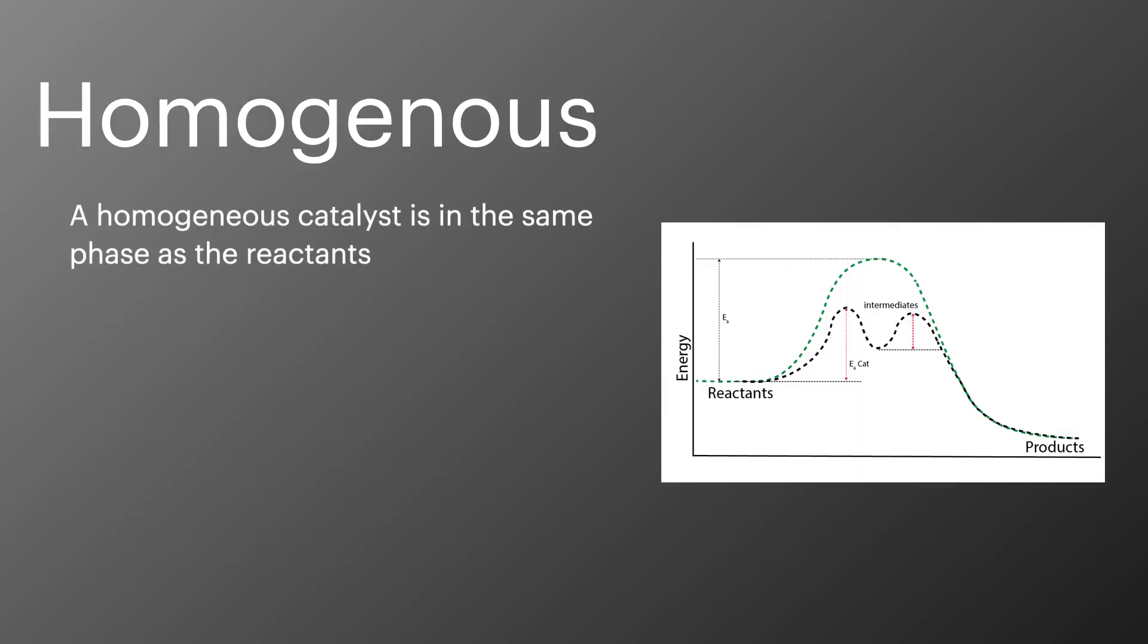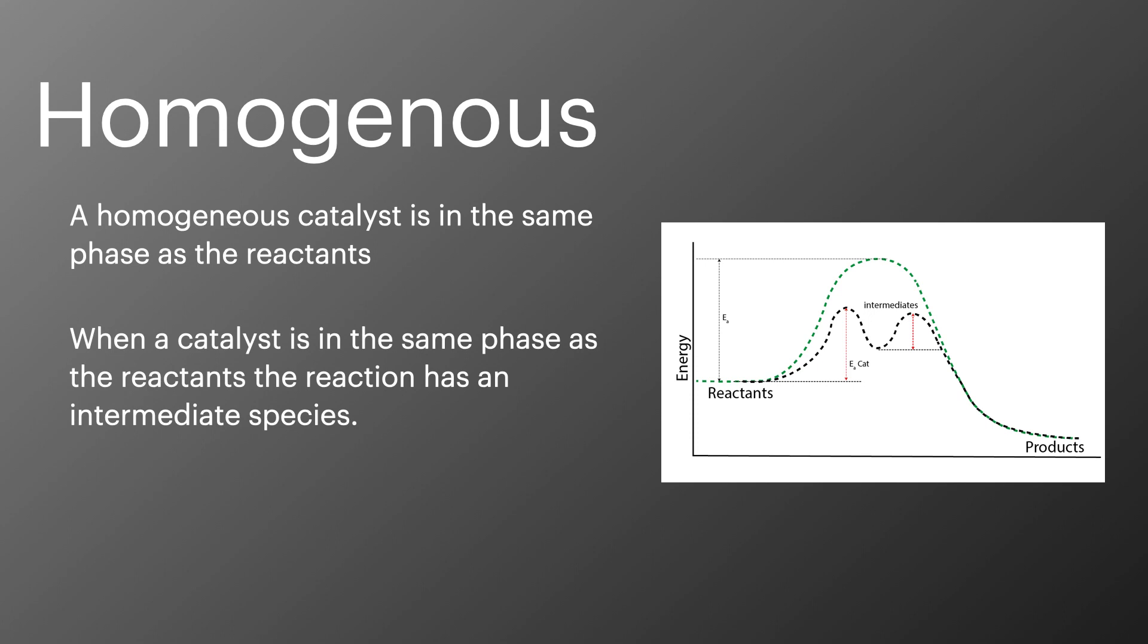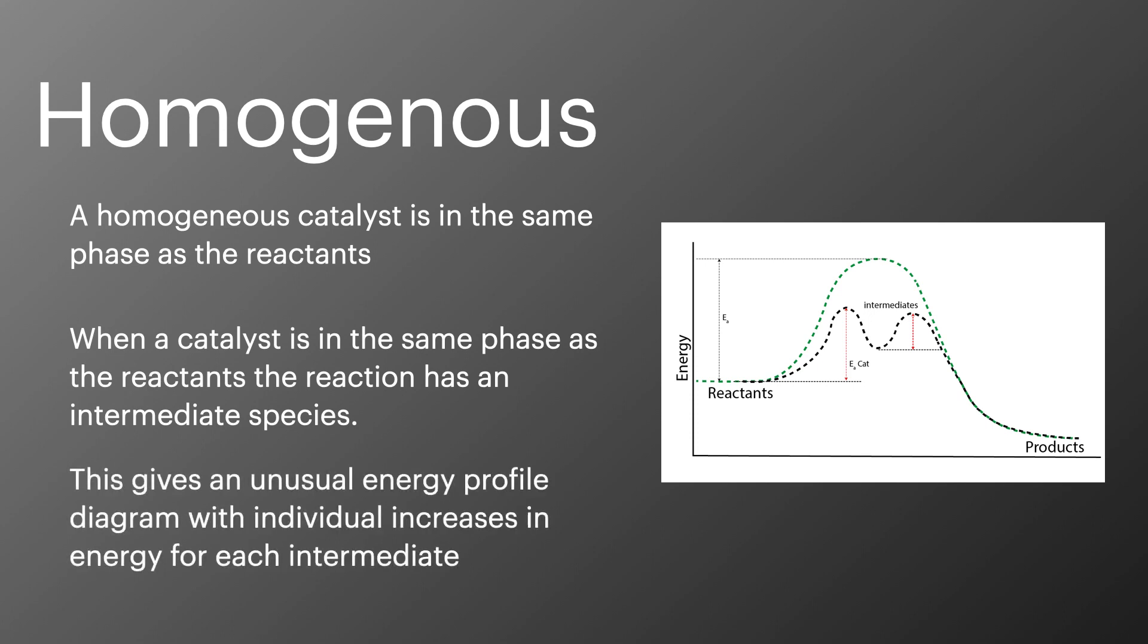Homogeneous catalysts are in the same phase as the reactants. Catalysts like this lead to the formation of an intermediate species. This creates a strange looking energy profile diagram where the formation of the intermediates both have activation energy which gives this double hump in the middle.